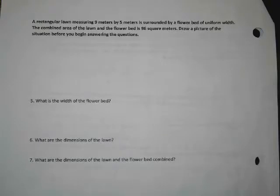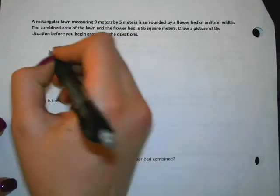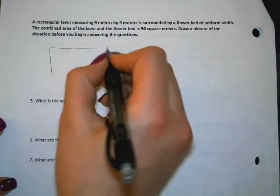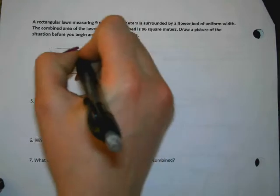So for this we're not going to draw the parabola and think about anything going up in the air or anything. We're actually going to draw a picture of the situation. So they're talking about a rectangle for a lawn. So we're going to go ahead and draw a rectangle.